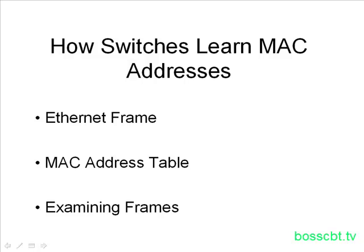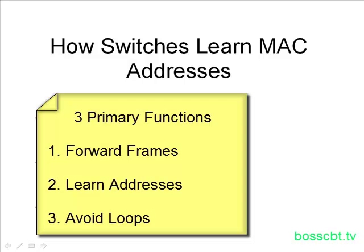A switch has three primary functions. The first one is to forward frames — one device sends a frame, it hits the switch, and the switch is responsible for forwarding the frame to its destination. The second primary function, and this is what we're going to focus on today, is learning MAC addresses.